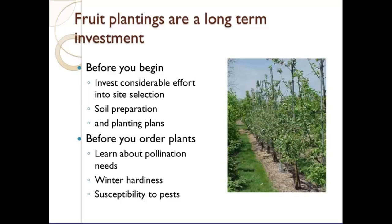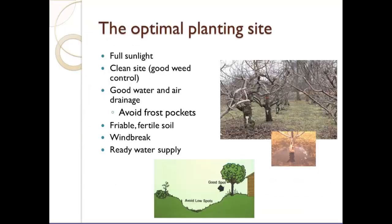We'll also cover winter hardiness considerations and susceptibility to pests. Next week you'll have a good introduction on disease control. For the optimal planting site, all small fruit and tree fruit require full sunlight — and when we say full sunlight, we mean all day long. Wooded areas can cast shade partway through the day, so you really need to look at where the shade patterns are on any ground you're considering. You also need to spend considerable time cleaning the site first, evaluating what type of weeds you have, particularly perennial weeds.